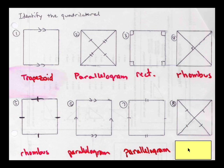And in the last one, question number eight, I have the diagonals bisected but they're also congruent. Because the diagonals are bisected and congruent, this would be a rectangle.